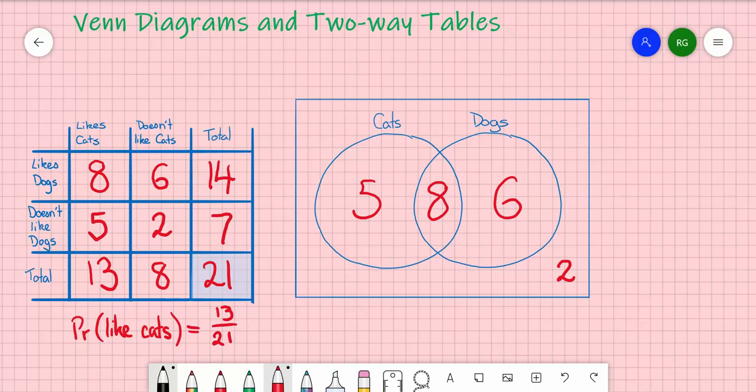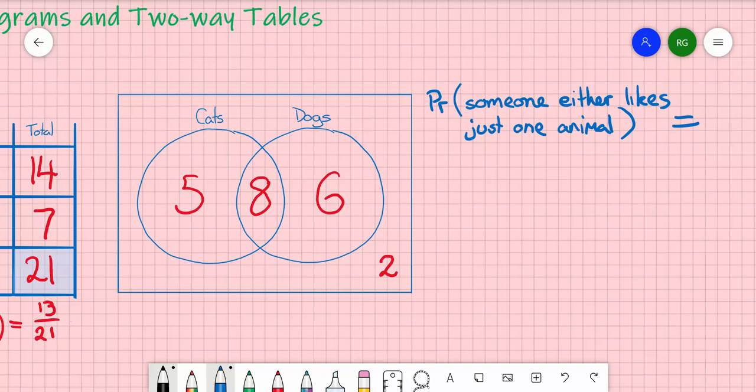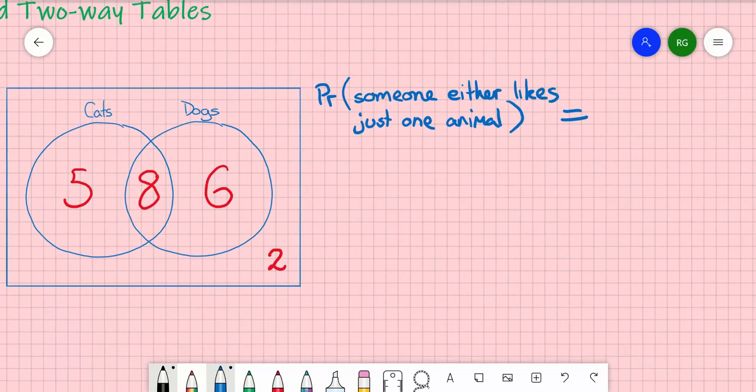In total, we should have our 21 people allocated somewhere. A very simple little scenario here is, what is the probability that someone either likes just one animal? The number of opportunities here are 6 and 5, because the group of 5 here only like cats and the group of 6 only like dogs. So there is 11 out of a total 21 people. So there is your probability for that scenario.